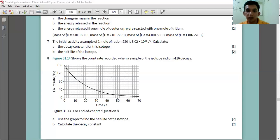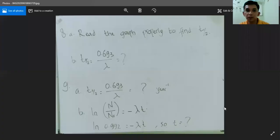After you find the half-life, then you can find lambda. Because they ask you the decay constant, so lambda is equal to 0.693 over half-life.